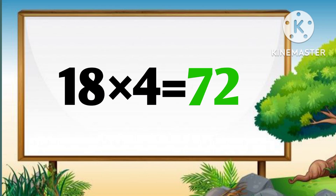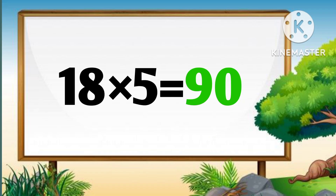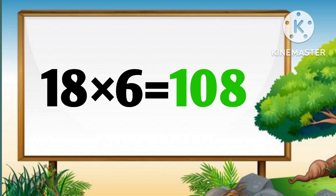Eighteen fours are seventy-two. Eighteen fives are ninety. Eighteen sixes are hundred-eight.